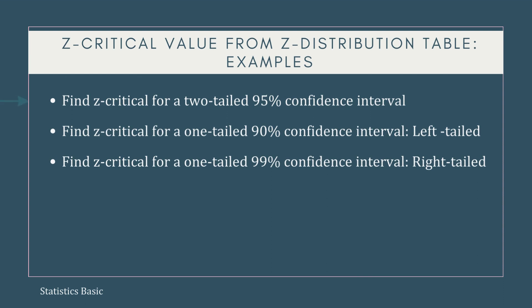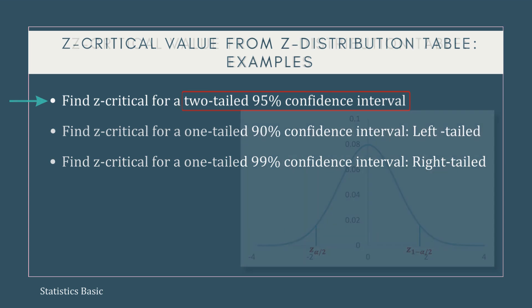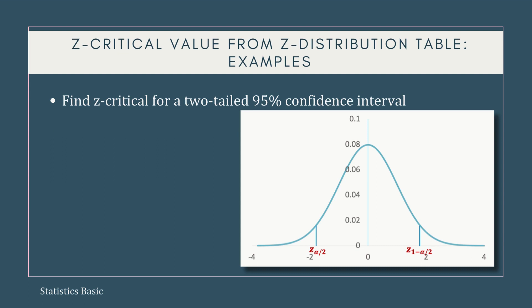Considering the following examples, let's start with the first case, where we need to find the z-critical values for a two-tailed 95% confidence interval. Since we are asked for a two-tailed 95% confidence interval, we have to calculate the lower as well as the upper z-critical values. However, we do not need to calculate both critical values because the standard normal distribution is symmetric about the mean z equals 0. The absolute values of the two critical values will be the same while the signs will be different.